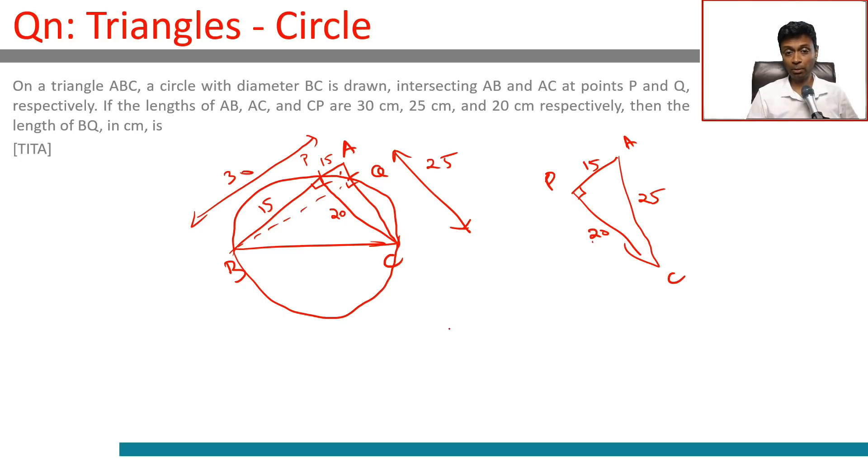PC. So I'm looking at triangle BPC now. This is 15, this is 20, this is 20. This should be 25. Wonderful. So we've got BC to be 25.